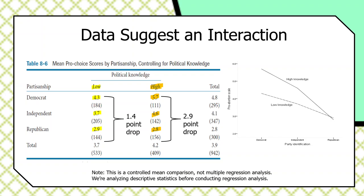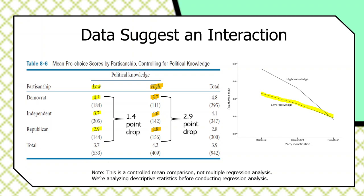Here it is graphically — this really tells the story. There's that low knowledge line dropping about 1.4 across values of partisanship, and a much more steeply sloped line among high knowledge respondents. It's almost like when you reach into the data and switch knowledge from low to high, the relationship becomes very well behaved and quite a bit stronger. Let's figure out how to model this in regression.